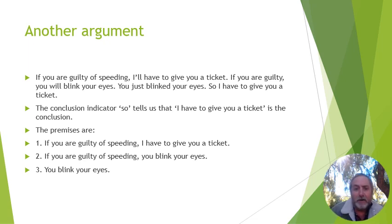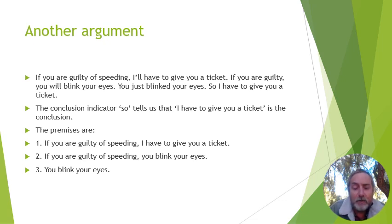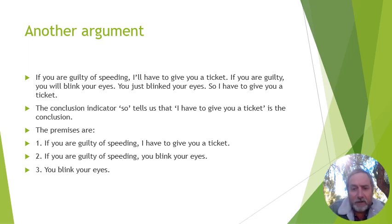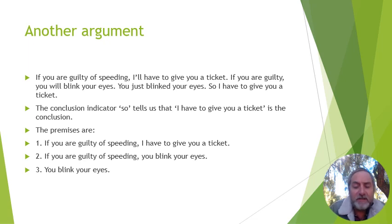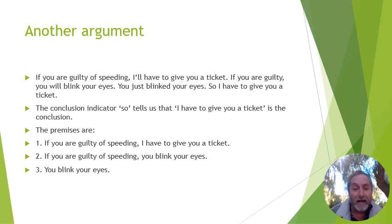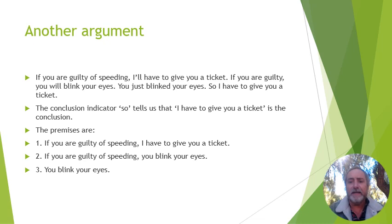Here's another argument: 'If you're guilty of speeding, I'll have to give you a ticket. If you are guilty, you will blink your eyes. You just blinked your eyes. So I have to give you a ticket.' Is this a valid argument? We have 'so' as a conclusion indicator, so the conclusion is 'I have to give you a ticket.' Premises: one — if guilty of speeding, then ticket; two — if guilty of speeding, then blink eyes; three — you blink your eyes.